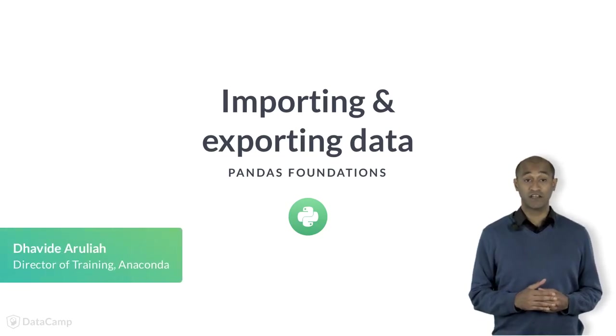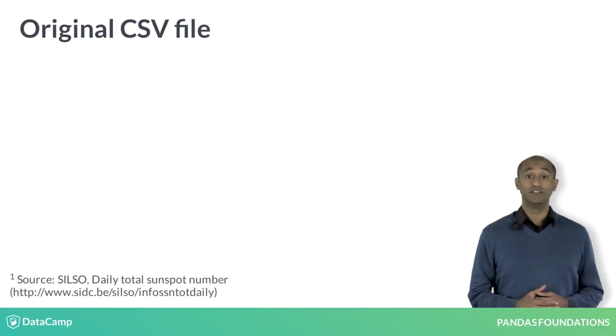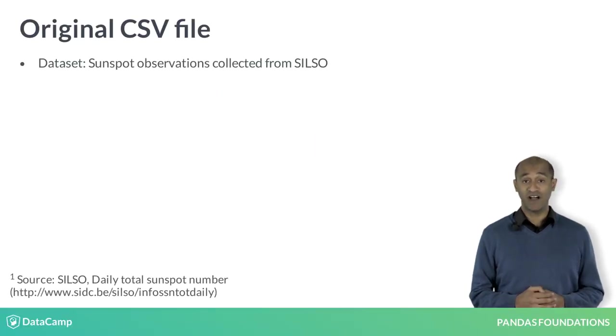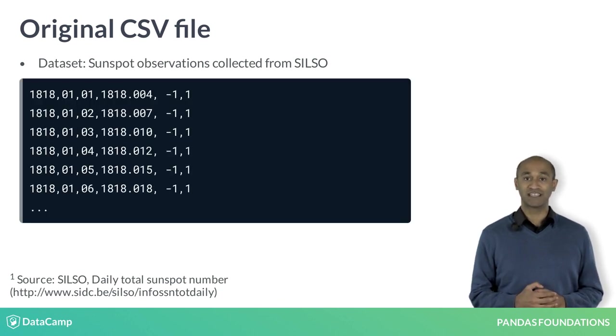Now, let's extend our skills for reading dataframes from files. We'll use a comma-separated values file of sunspot observations collected from CILSO, the Sunspot Index and Long-Term Solar Observations. The entries date back to the 19th century with over 70,000 rows.